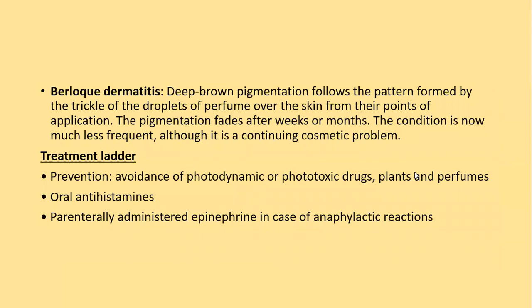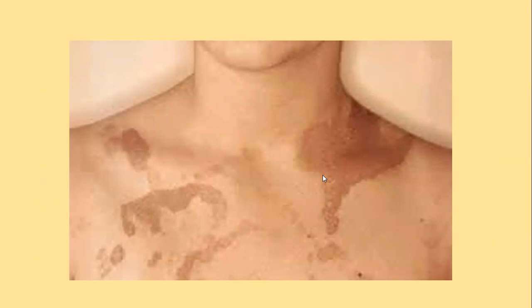Berloque dermatitis is a deep brown pigmentation that follows the pattern of trickling droplets of perfume over the skin from their point of application. This pigmentation fades after weeks or months. The condition is now much less frequent due to a decrease in the use of bergamot oil in perfumes. It gives an appearance of liquid trickling on the skin.